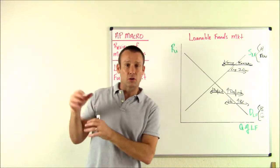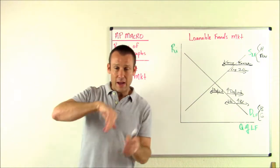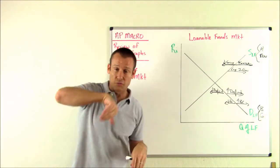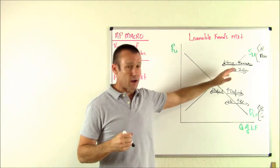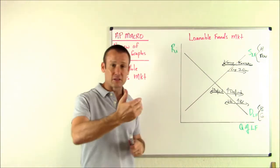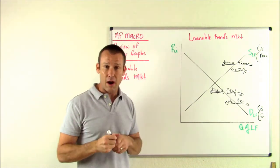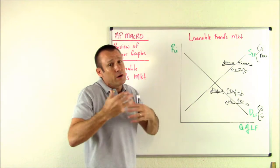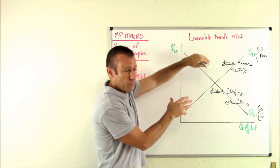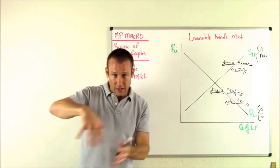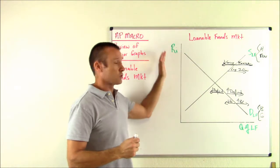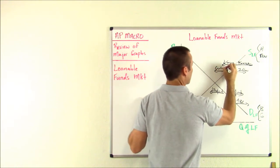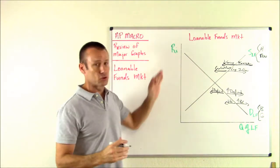If all of a sudden investments abroad look really good and we have a capital outflow — money flowing out of our economy — household savings is not going to domestic businesses or the domestic government; it starts to flow out. If we get an outflow, the supply of loanable funds for domestic businesses and our domestic government shifts to the left, and the interest rate goes up. Capital outflow out of the United States — financial capital heading out — shifts supply to the left, and we get exactly what we expect: the real interest rate goes up.